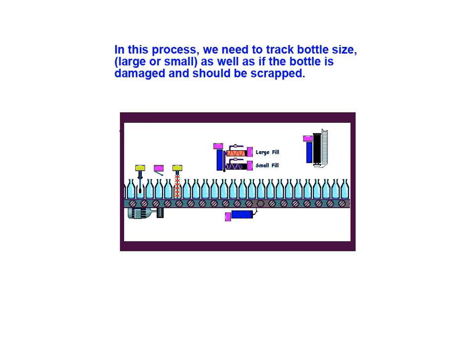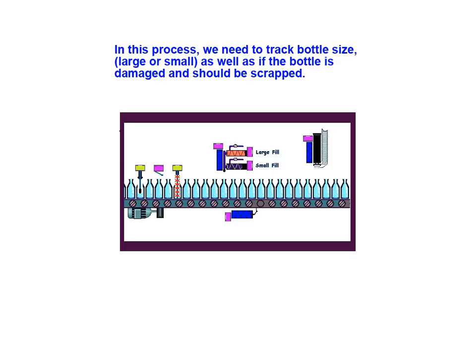In this application we need to track bottle size — large or small — as well as whether the bottle is damaged and should be scrapped. We will use one shift register to track the bottle size, and a second register to track the location of damaged bottles on the line.